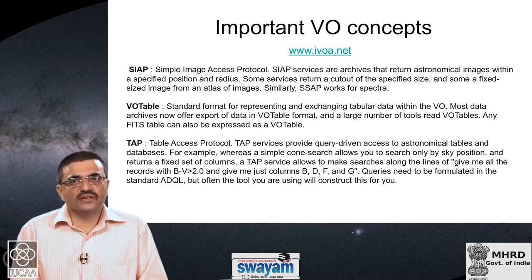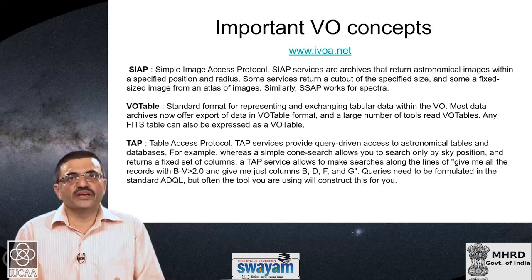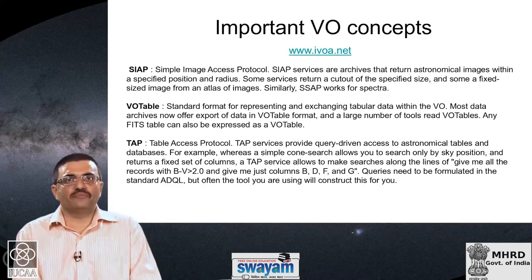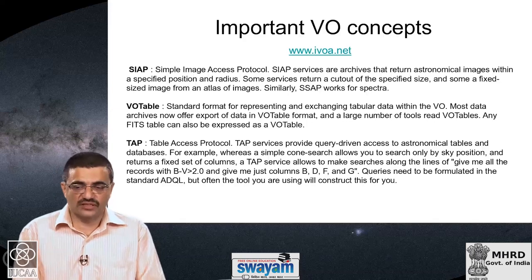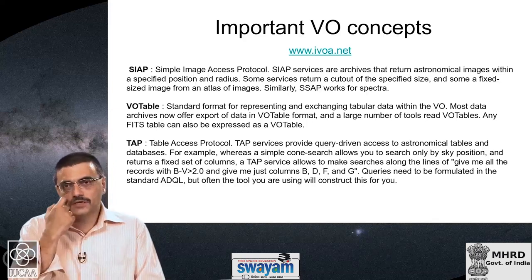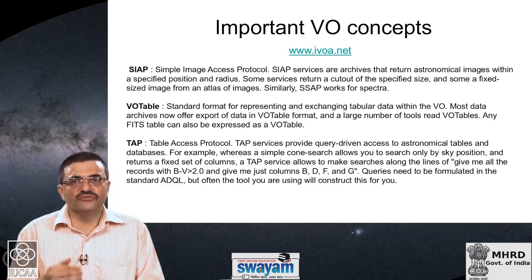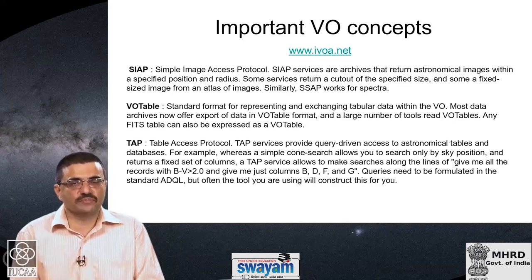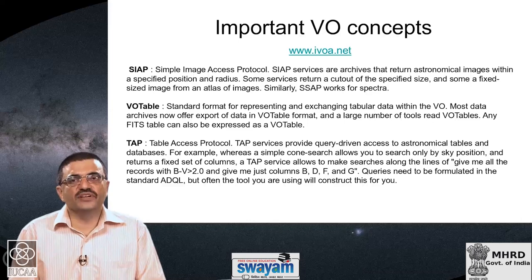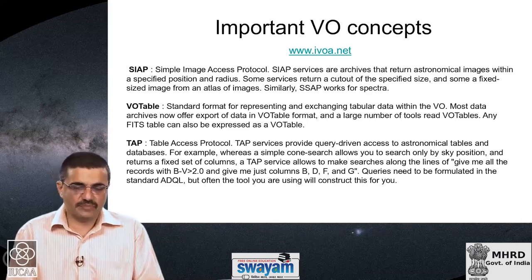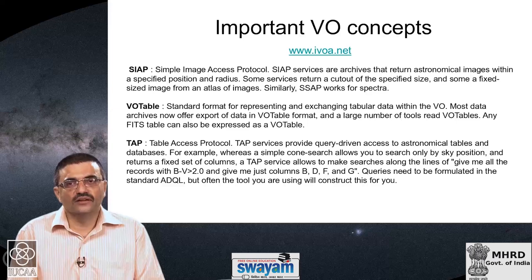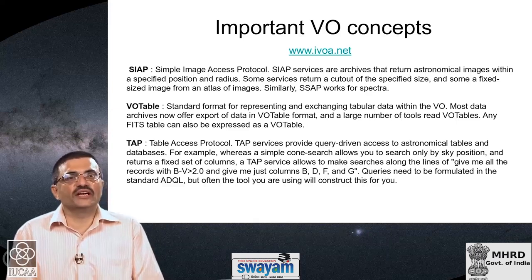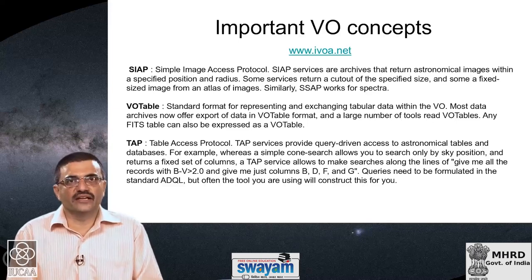A related concept is the simple image access protocol, SIAP. A SIAP service is an archive that returns astronomical images within a specified position and radius. It goes beyond what a cone search does — a cone search only gives you a list or table of astronomical sources, whereas a SIAP service returns an entire image of that part of the sky. Similarly, the Simple Spectrum Access Protocol, SSAP, returns spectra for all objects located in that part of the sky.